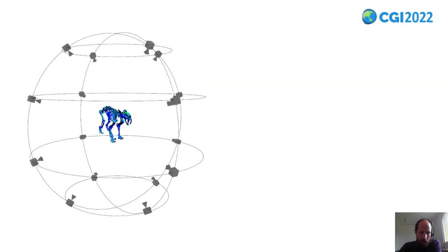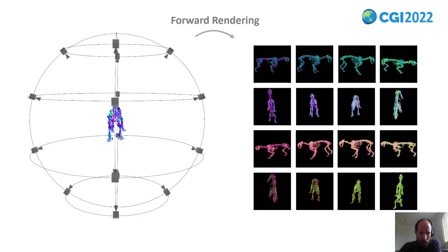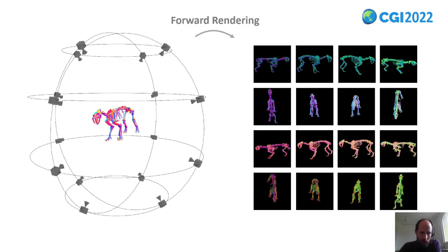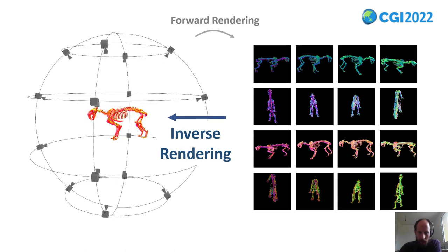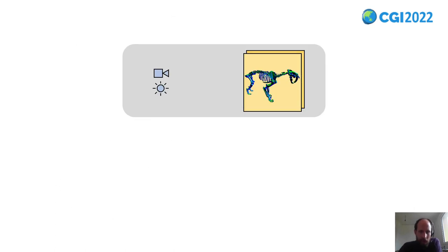We can forward render 3D objects to get RGB images, and we can also invert this operation to reconstruct the object from the images. We call this inverse rendering. There are multiple methods for inverse rendering. One quite new and powerful tool is differential rendering.